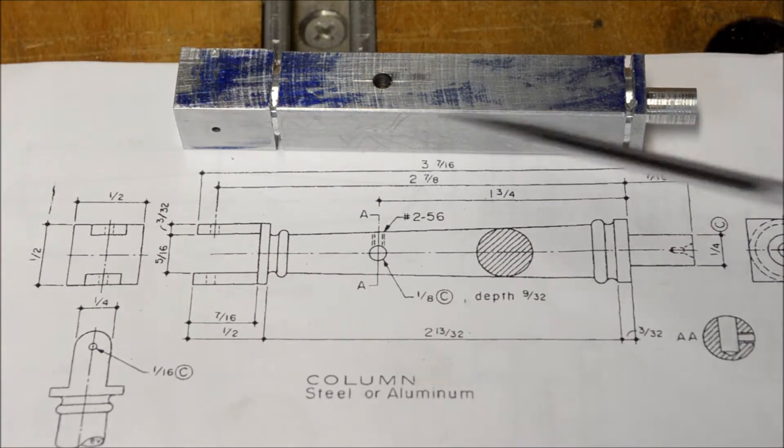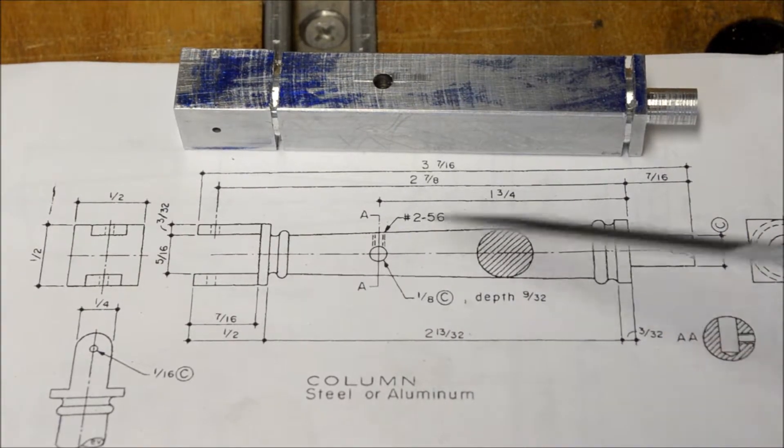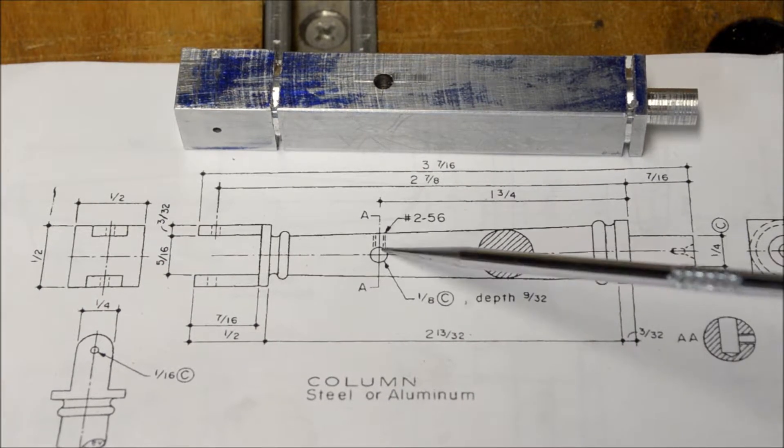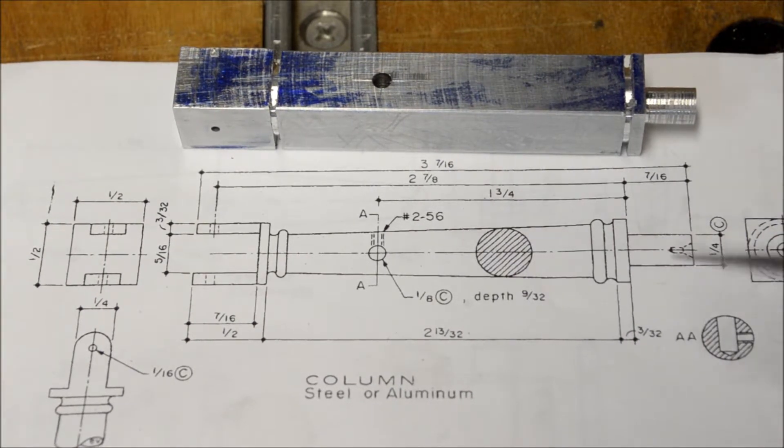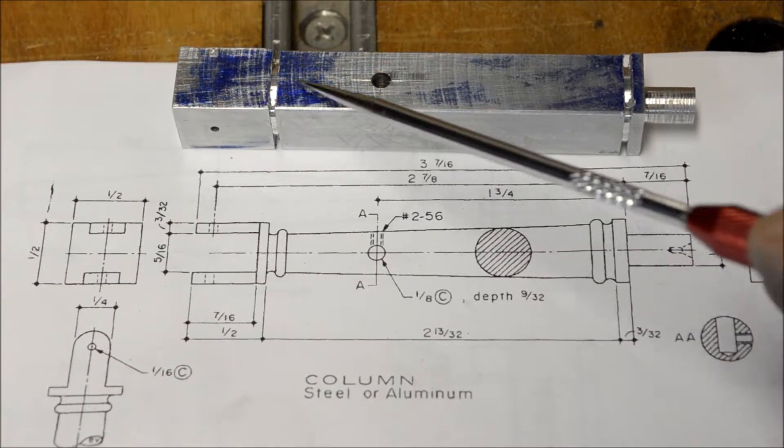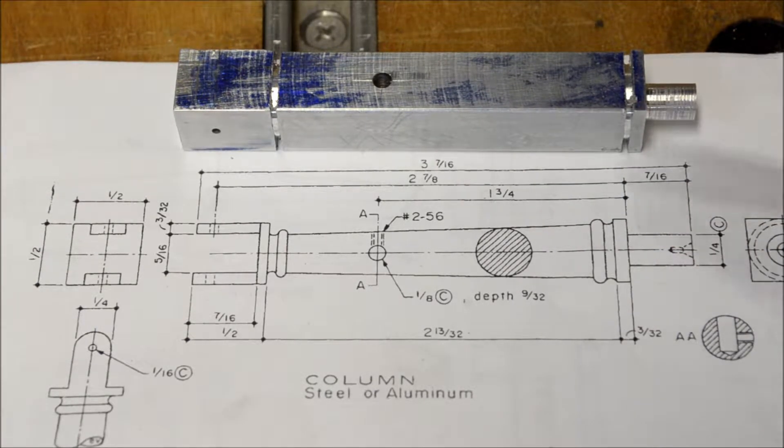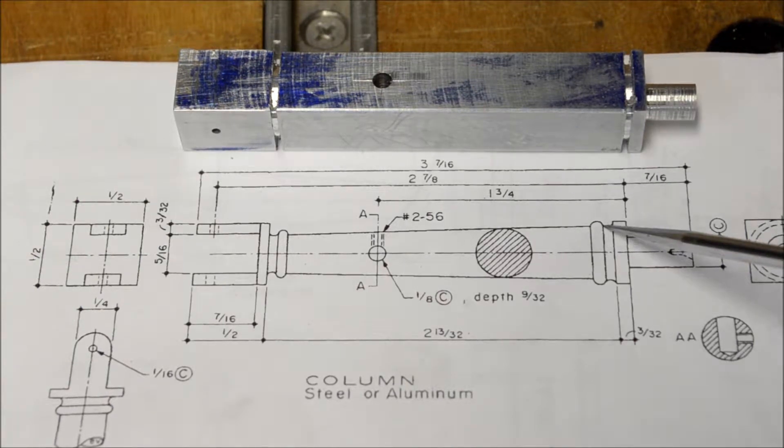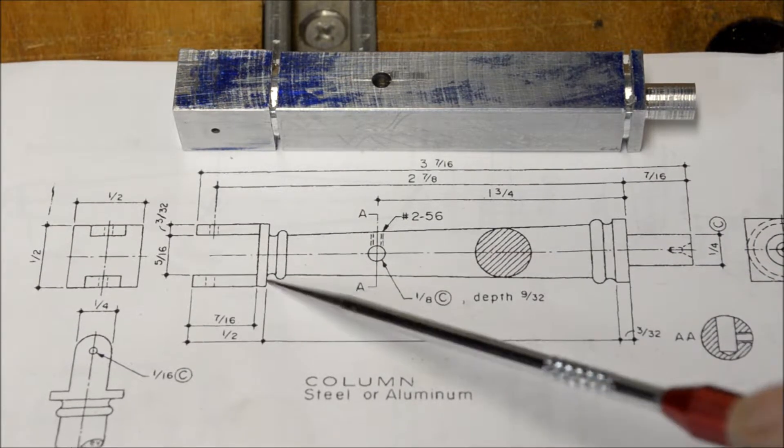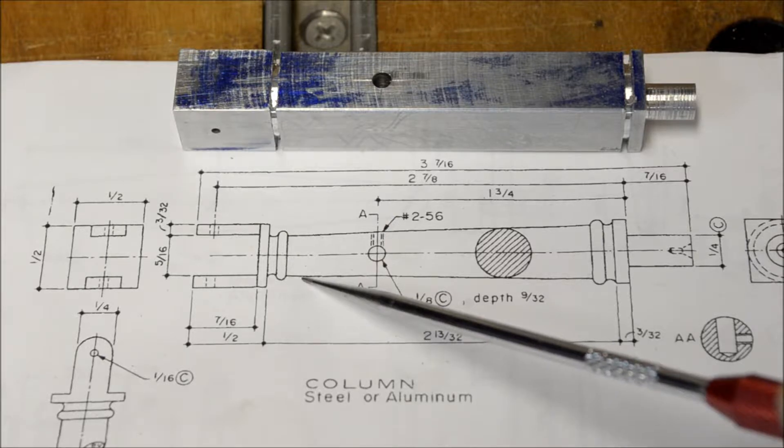So what we have here is all the holes are drilled out. The set screw hole is tapped if you remember from previously. So now I'm going to turn this down between these areas, make this round. I've got to make a tool bit of some sort to make these little profiles. Probably grind some high speed steel.